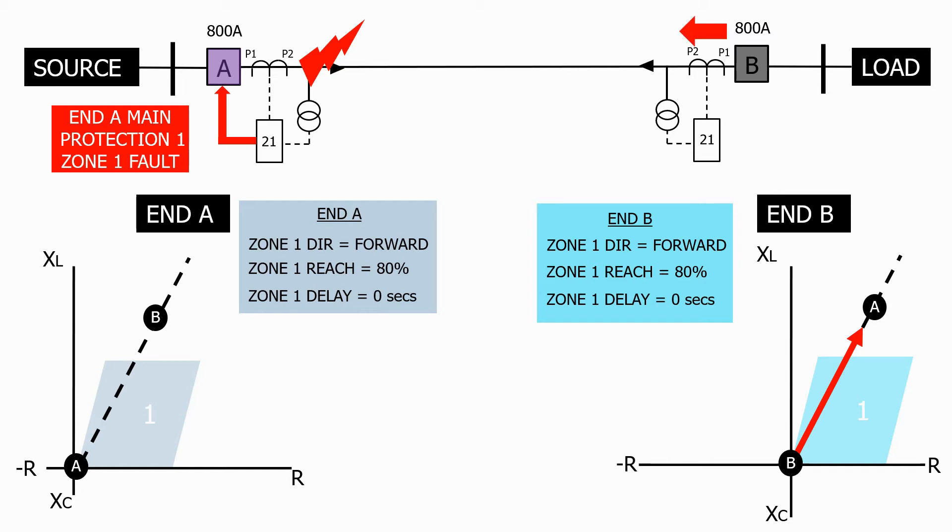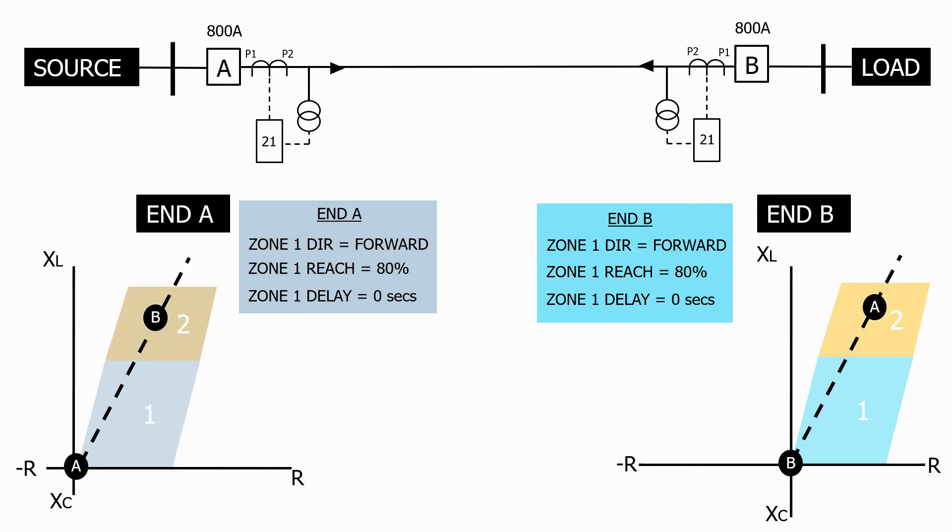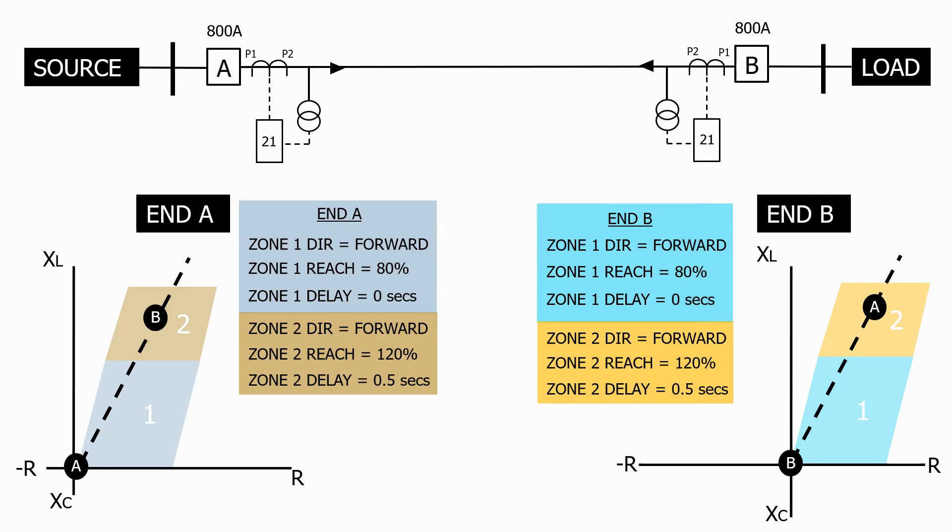To solve the problem, let's add an additional zone 2 characteristic on the impedance relays at both ends of the feeder. What will the characteristics be? Well, they both need to look in the forward direction. Let's make the reach 120% of the feeder length, and as we're not totally confident where the fault might be, let's give it a small time delay of 0.5 seconds.